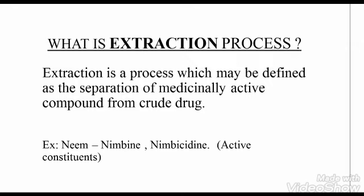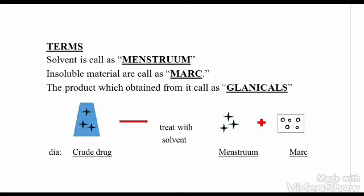In a crude drug, some active constituent or phytoconstituent is present. For example, in neem, nimbine and nimbicidine are present, which give us some medicinal effect or response. So the process of extracting these active constituents out of the crude drug is called the extraction process.